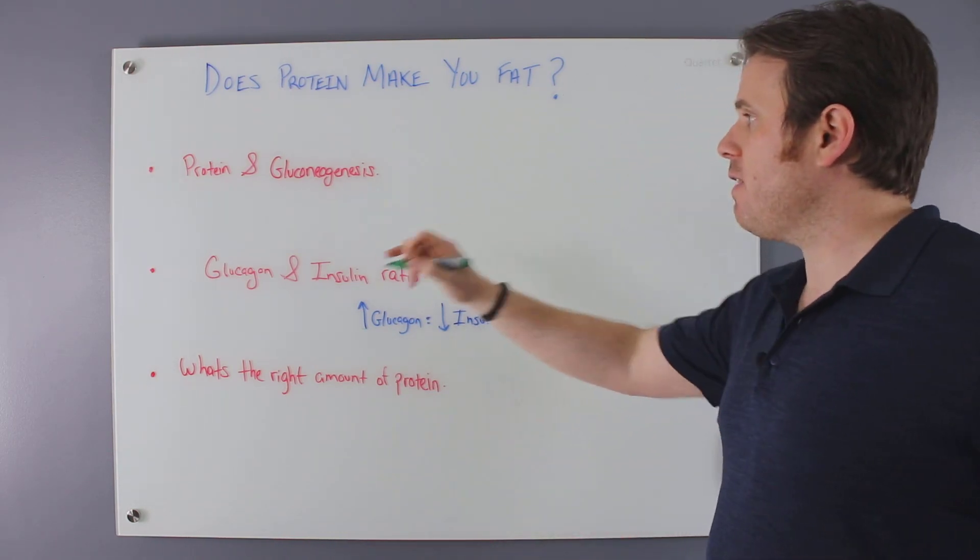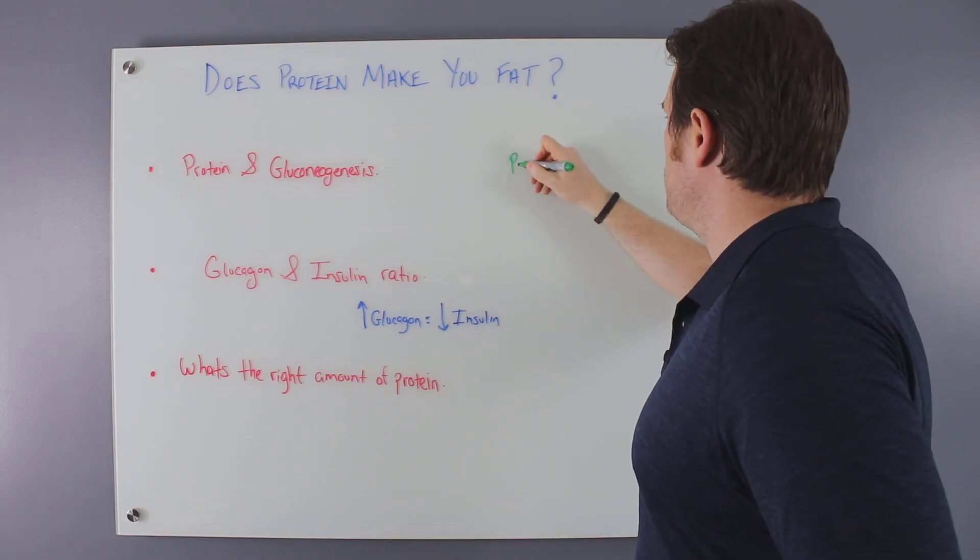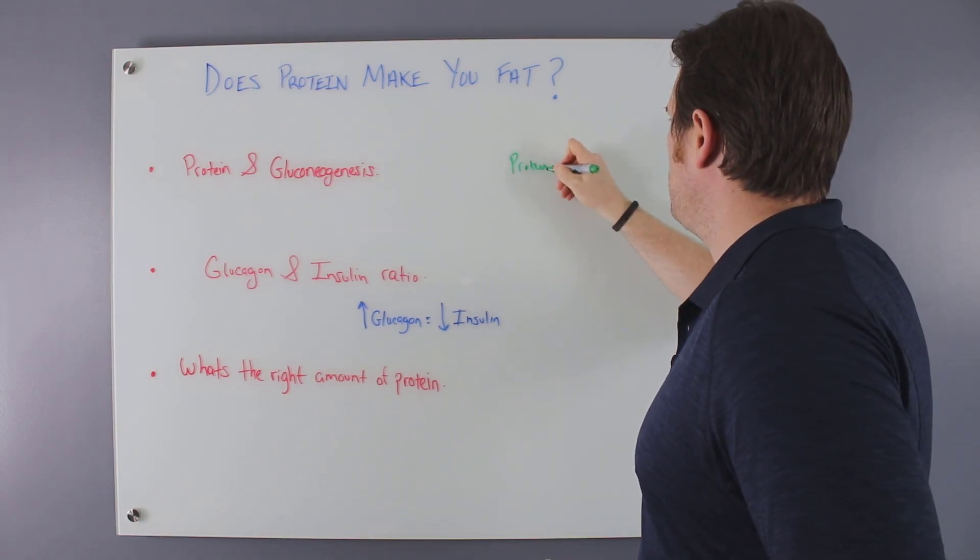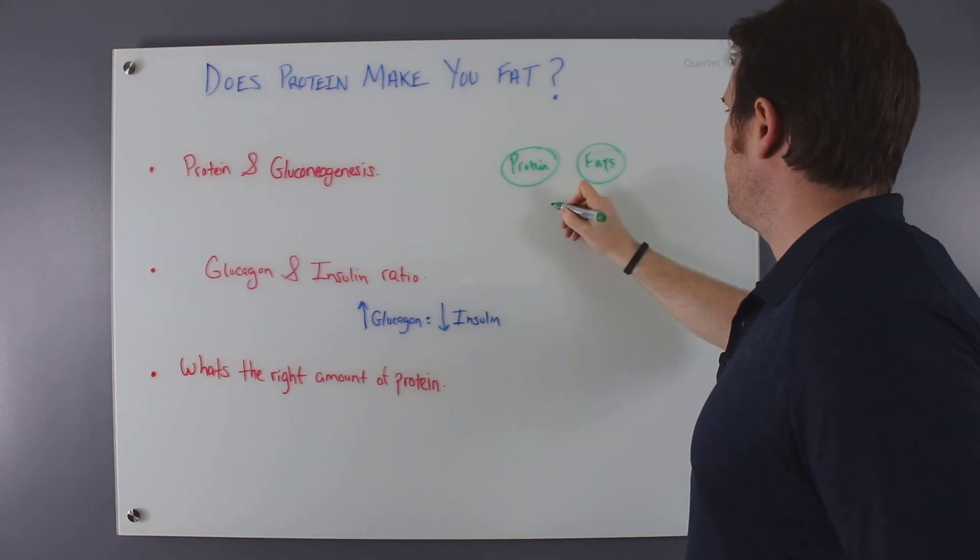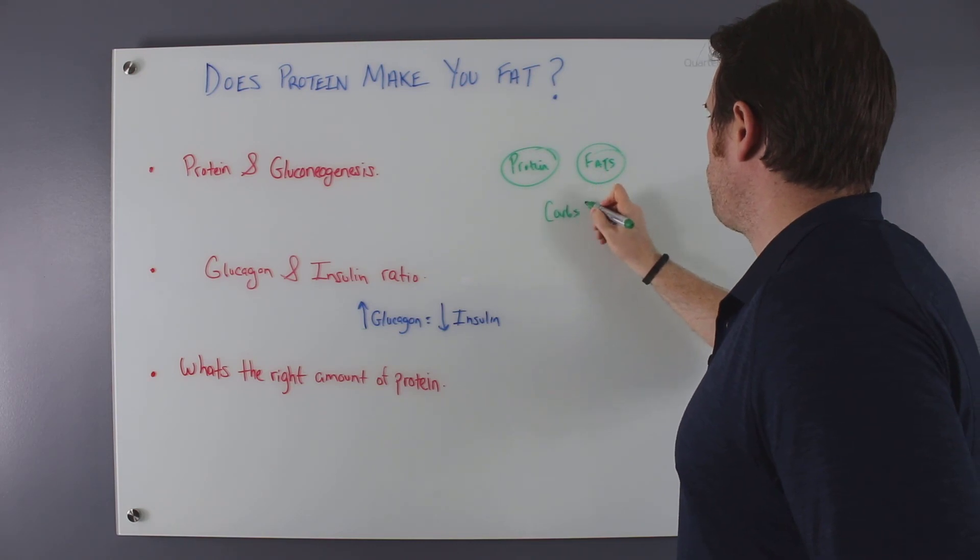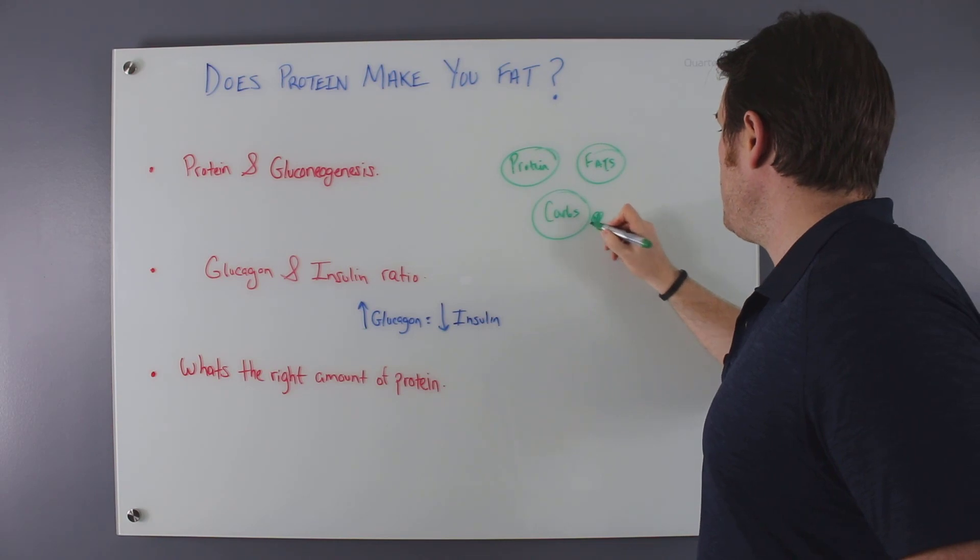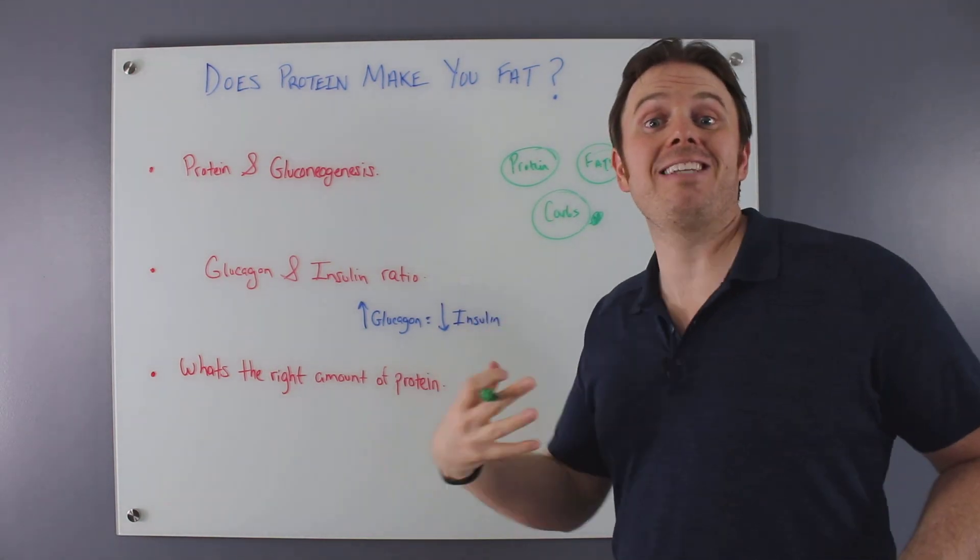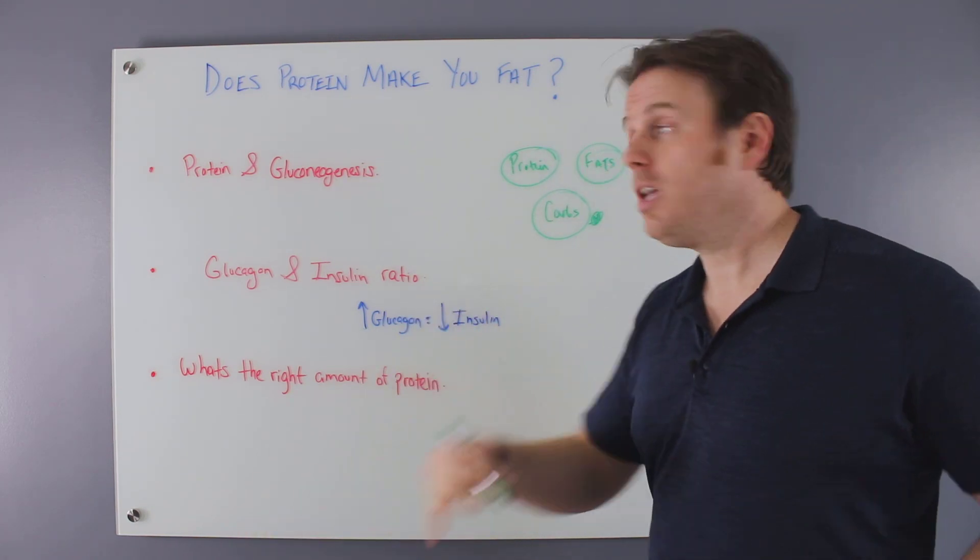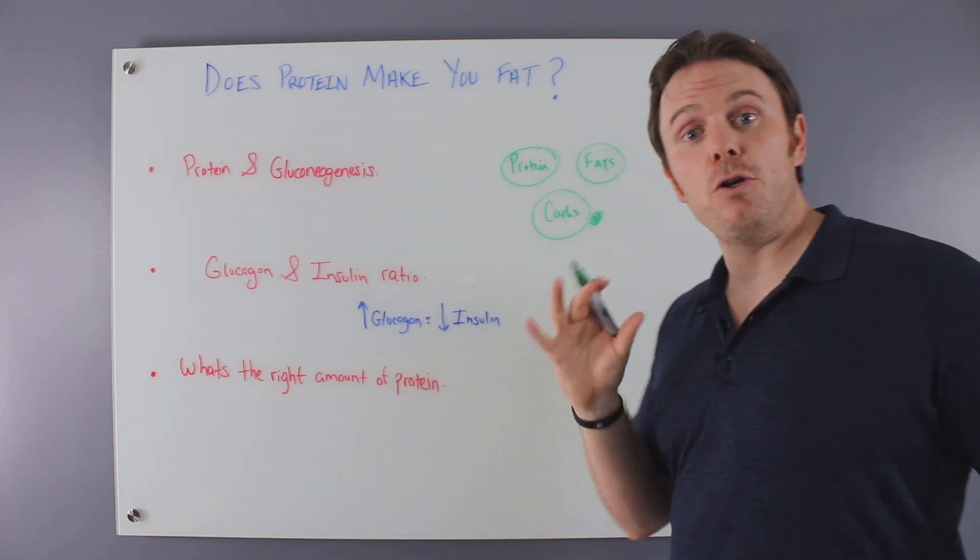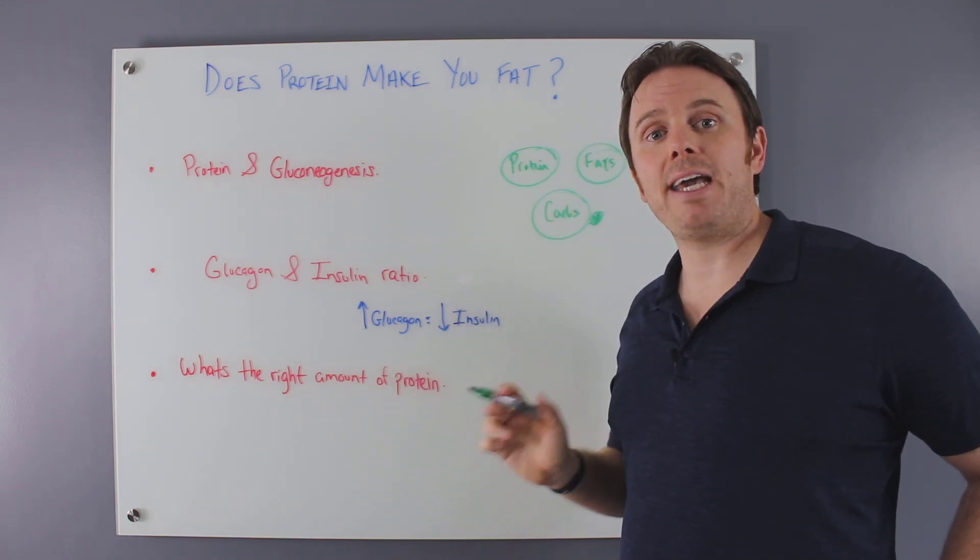Alright, let's dive in. So we have protein, which is a macronutrient. We have three major macronutrients: protein, fats, and carbs. Just to highlight, carbohydrates is the only macronutrient that has no essential form. There's no such thing as an essential carbohydrate. We have essential amino acids, we have essential fatty acids, but no essential carbohydrates. It's important to keep that in the back of your mind.